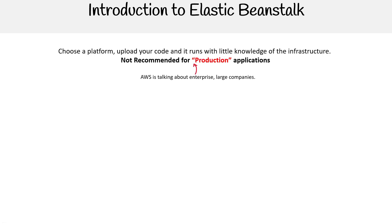For Elastic Beanstalk, you choose a platform, upload your code, and it runs with little knowledge of the infrastructure. I don't believe that anymore — I feel Elastic Beanstalk has become a lot more complex, and it's very difficult to get working nowadays without actually understanding the underlying components. Elastic Beanstalk is not recommended for production applications, and that is AWS's own recommendation. I think they're just trying to communicate that to enterprises who might expect a certain level of support or functionality.